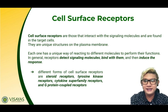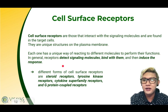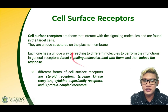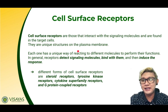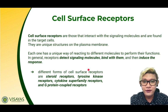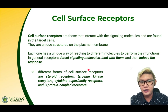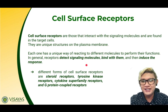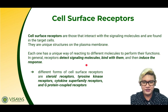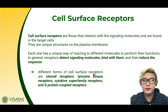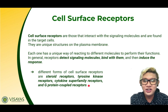Now let us talk about cell surface receptors. They are the ones that interact with the signaling molecules and are found in the target cells — they are unique structures on the plasma membrane. Each cell surface receptor has a unique way of reacting to different molecules to perform their functions. In general, receptors detect signaling molecules, bind with them, and then induce a response. The different forms of cell surface receptors are the steroid receptors, the tyrosine kinase receptors, the cytokine superfamily receptors, and the G-protein coupled receptors.